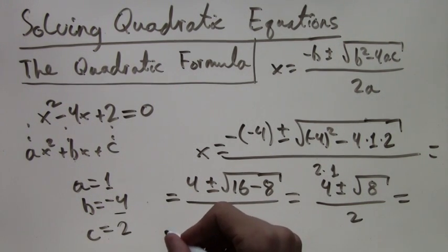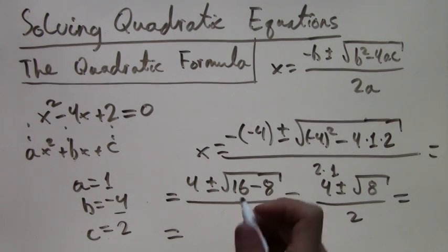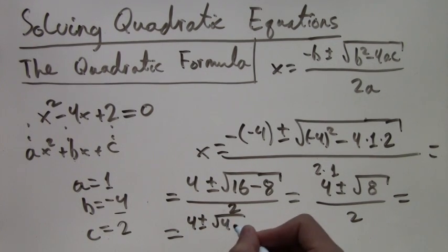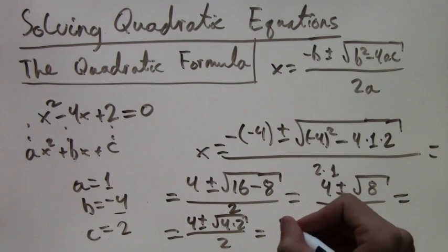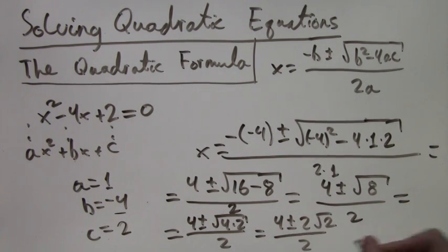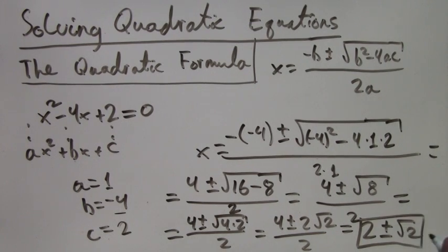And this simplifies further. We have 4 plus or minus the square root of 4 times 2. Because 8 is 4 times 2. And what we're doing is we're simplifying the square root. So that we get 4 plus or minus 2 times the square root of 2. So we get, once we divide everything by 2, 2 plus or minus root 2.